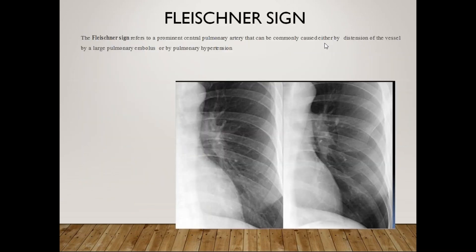Fleischner sign refers to a prominent central pulmonary artery, which can be caused either by distension of the vessel by a large pulmonary embolus or by pulmonary hypertension. Here we can see the pulmonary hilum, the pulmonary arteries and pulmonary veins arising from the hilum, and a dilated central pulmonary artery due to distension by the embolus.